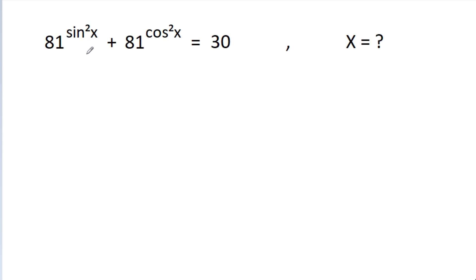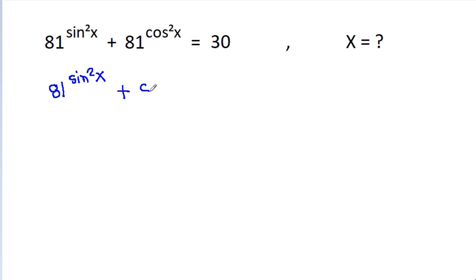In this video, we have been given that 81 power sin squared x plus 81 power cos squared x is equal to 30, then we have to find x. We have 81 power sin squared x plus 81 power cos squared x, and cos squared x is 1 minus sin squared x.